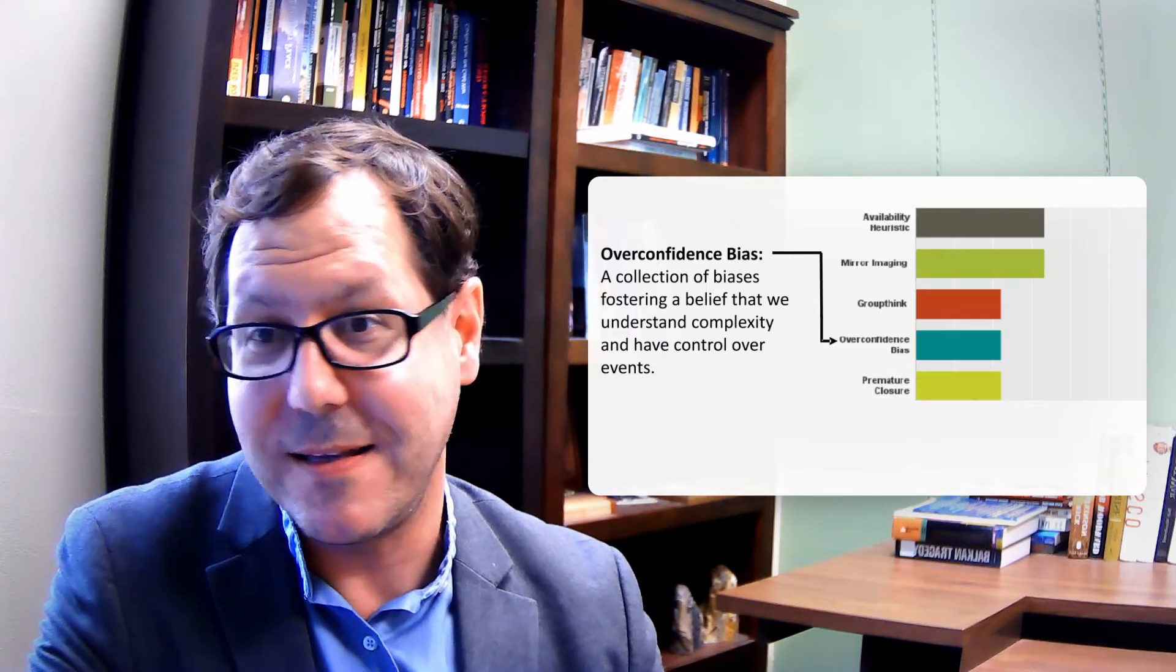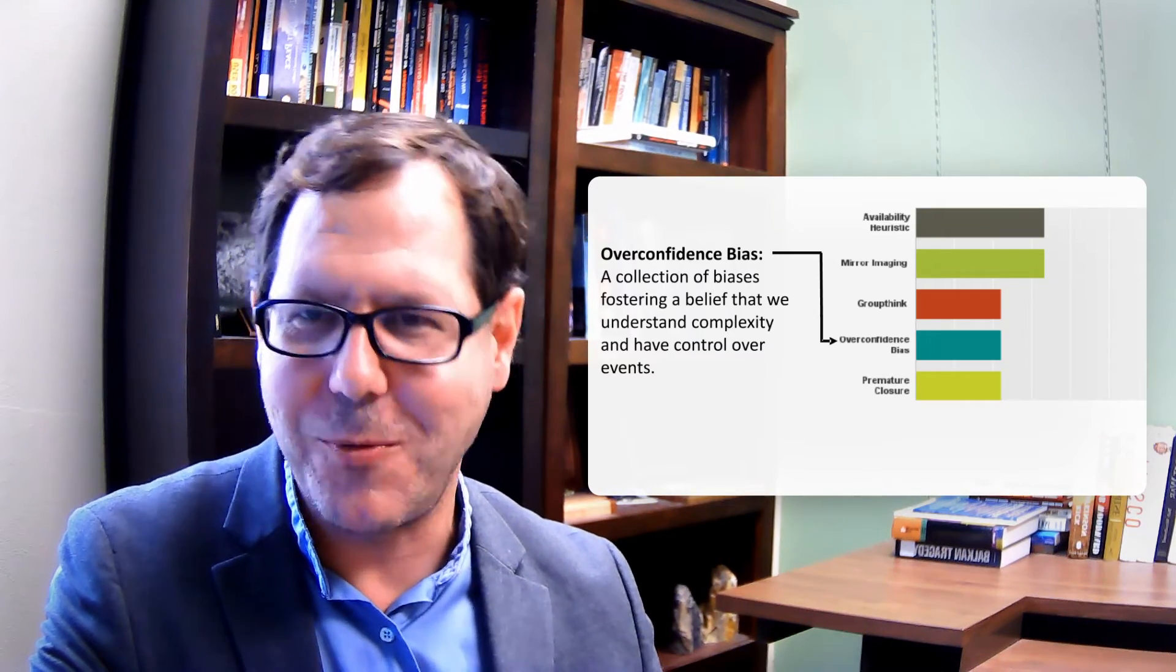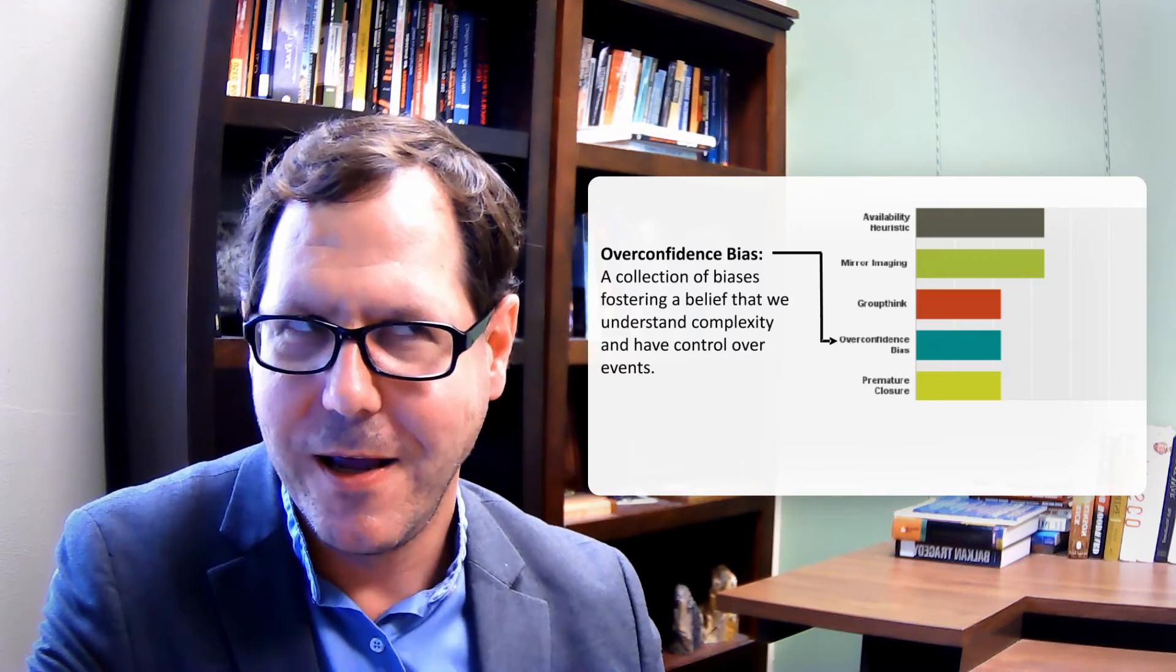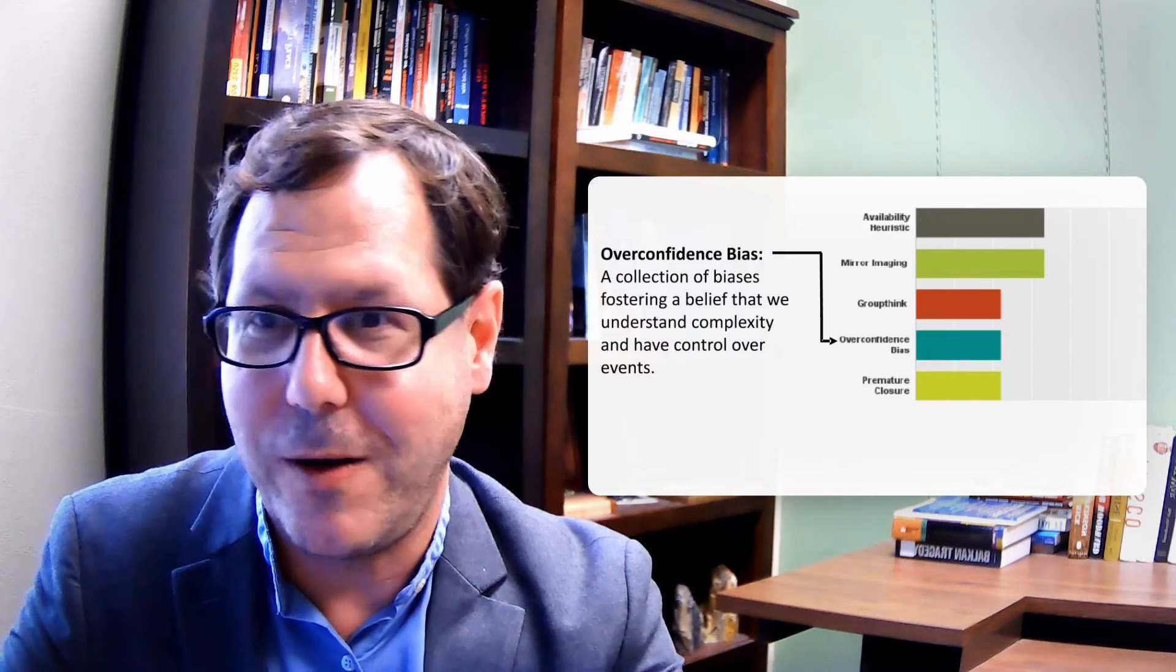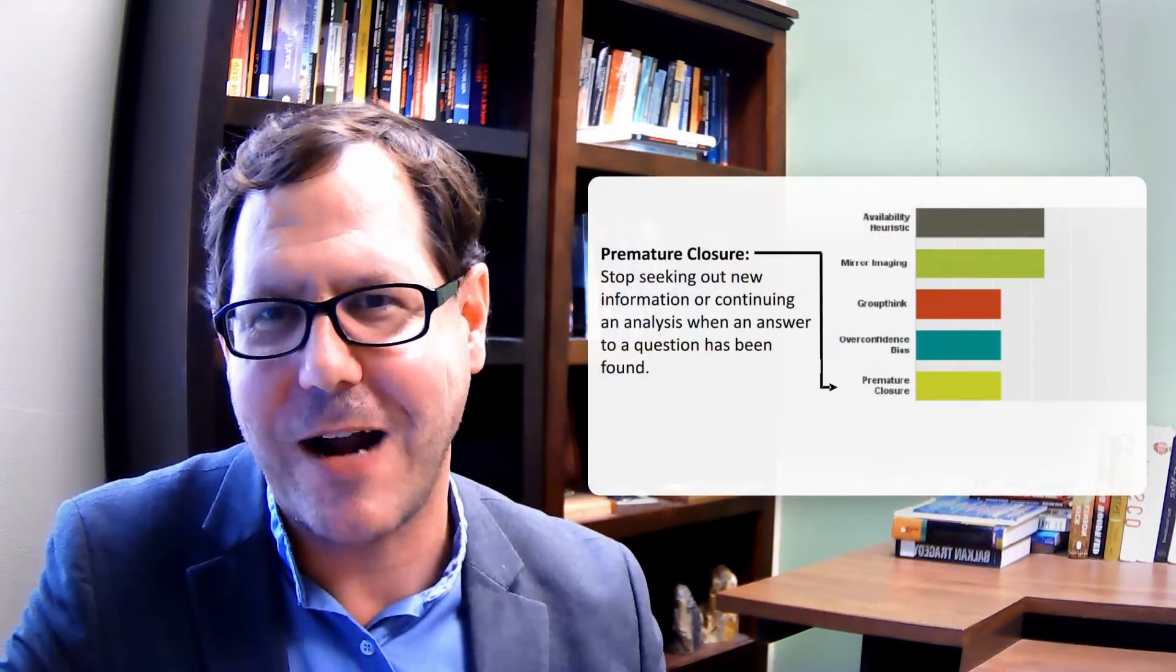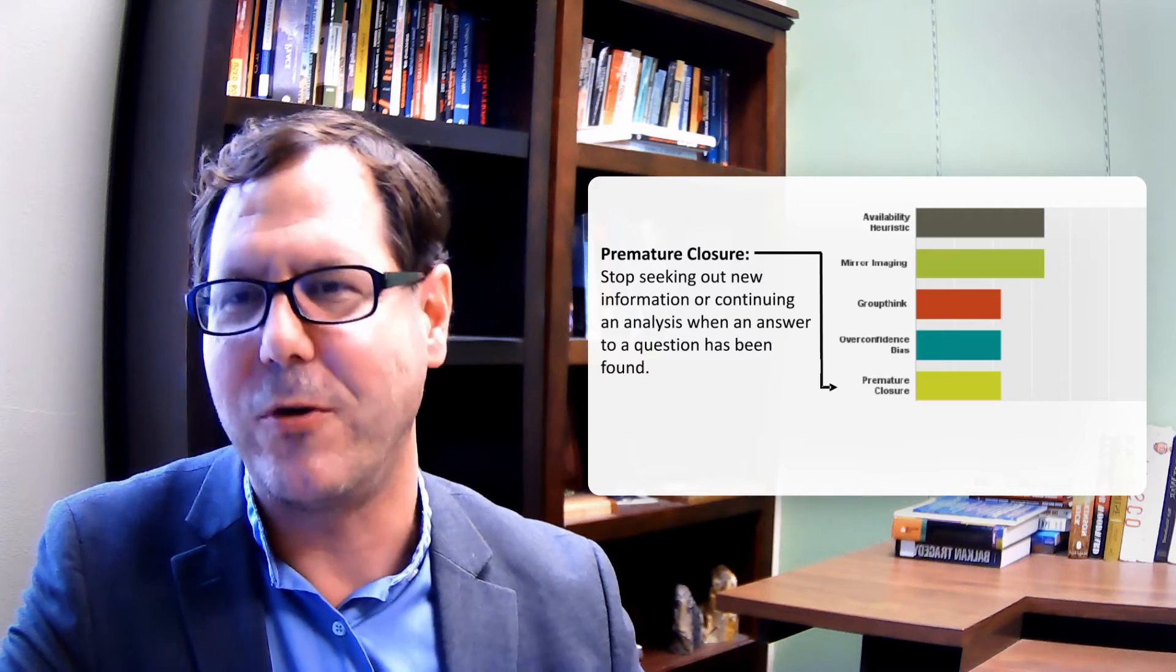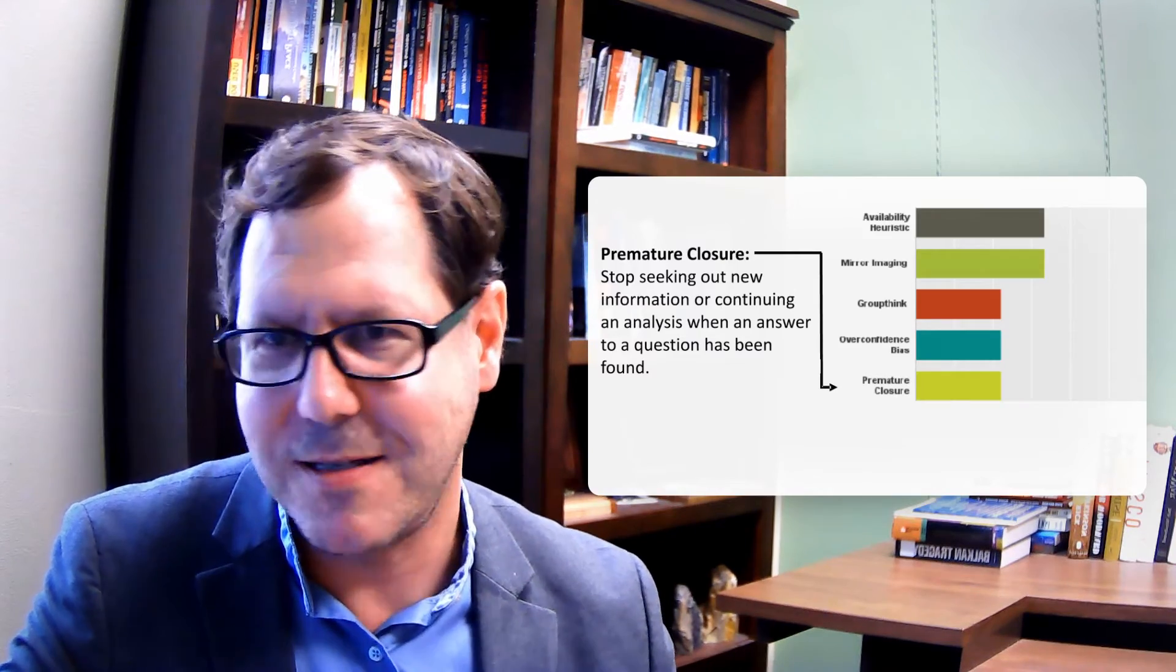Overconfidence bias - believing I have a pretty good handle on complex events, that I'm in a situation to direct and control. Human beings tend to map ourselves into situations and create a false sense of control and understanding when we rarely have full understanding. And premature closure is similar to satisficing - you stop seeking new information or building it into your analysis because you think you've got an answer.